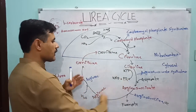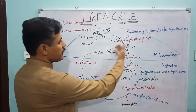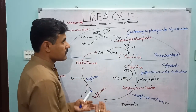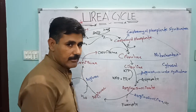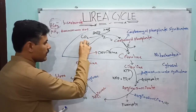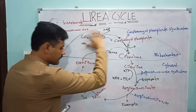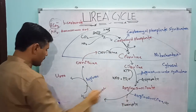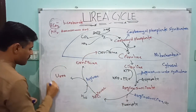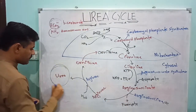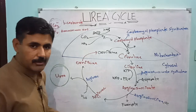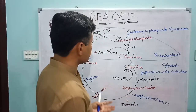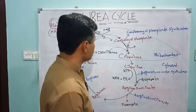This is the urea cycle, also called the ornithine cycle, where ammonia, through consumption of ATP via mitochondria and cytosol, is converted into a form of nitrogenous waste called urea.